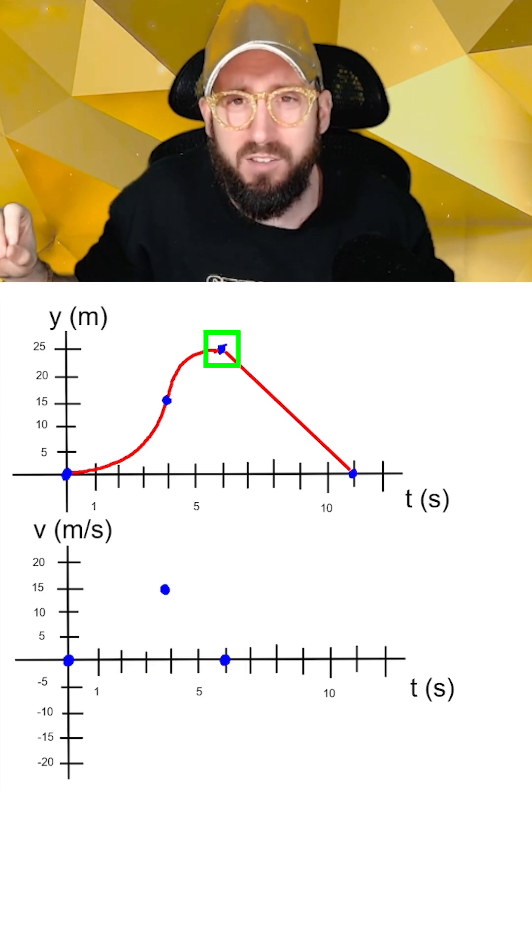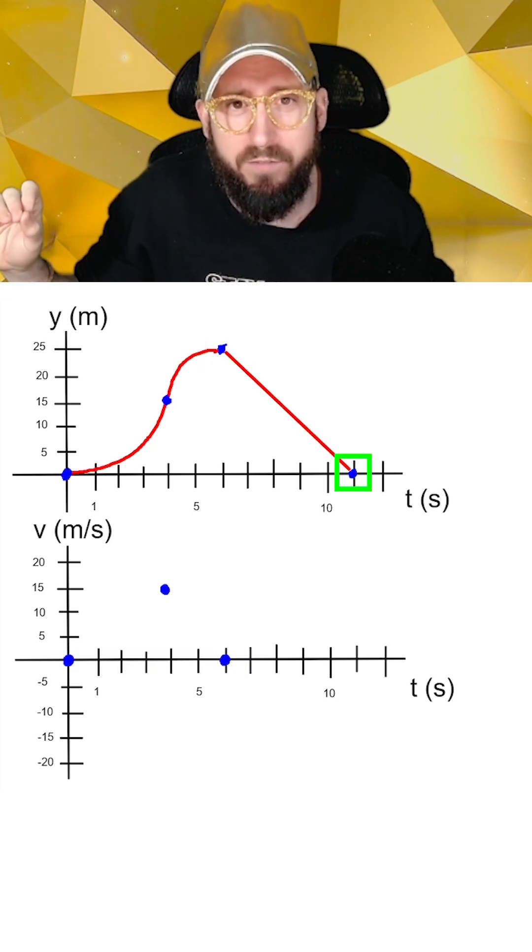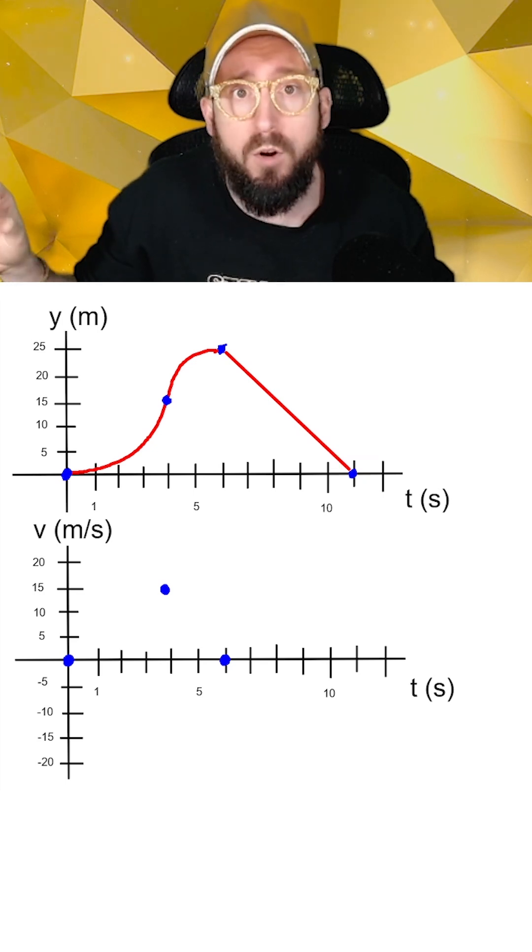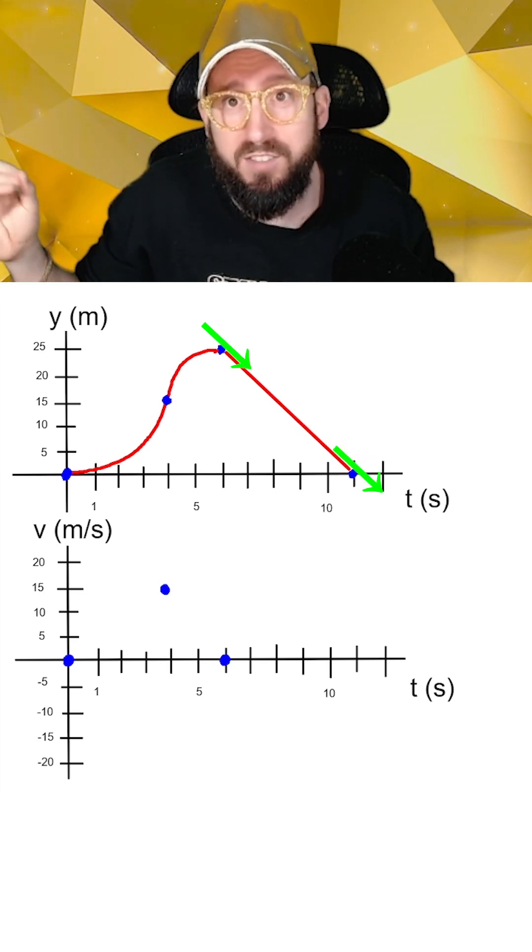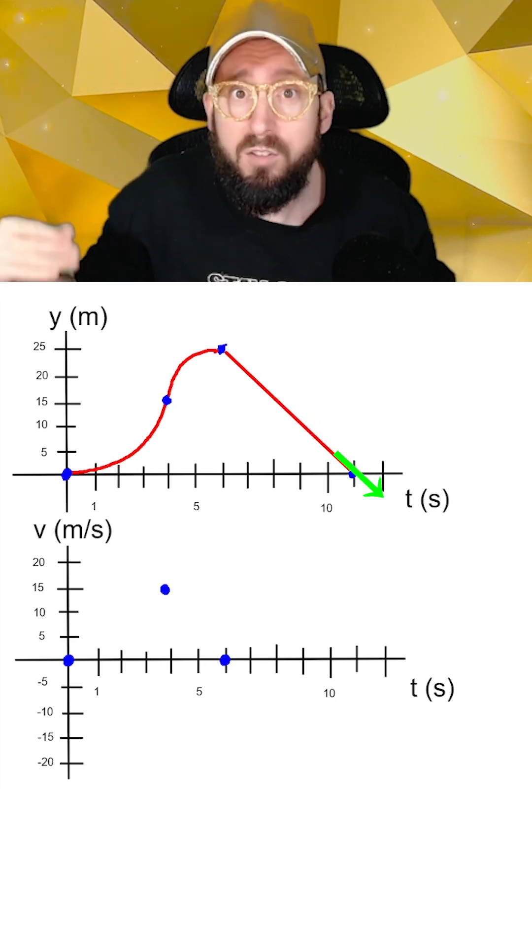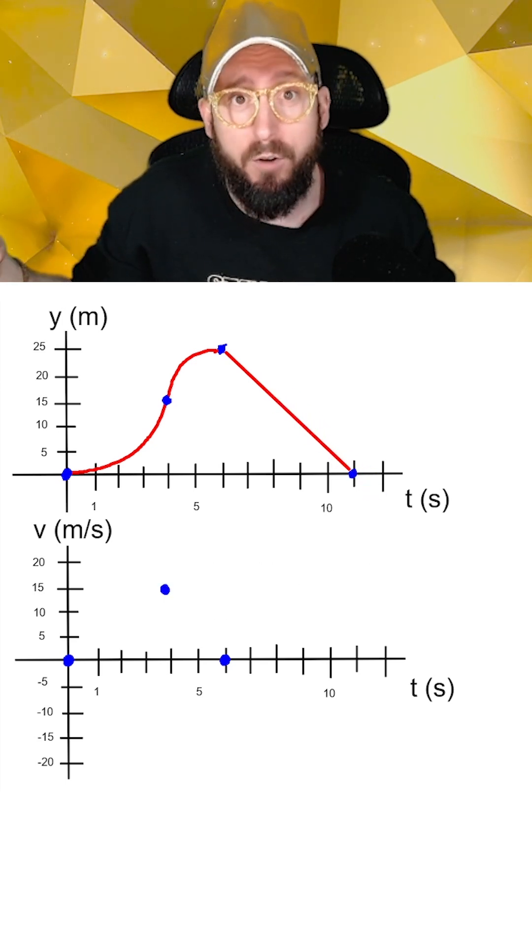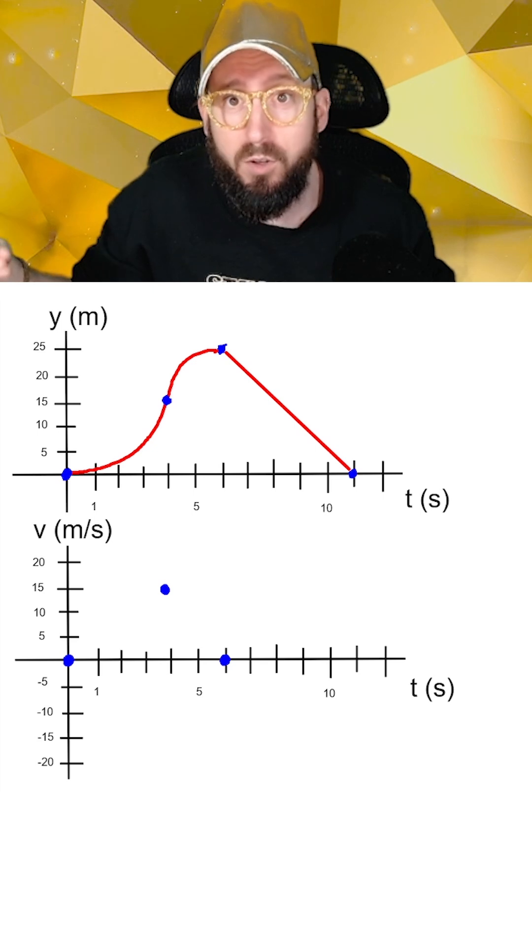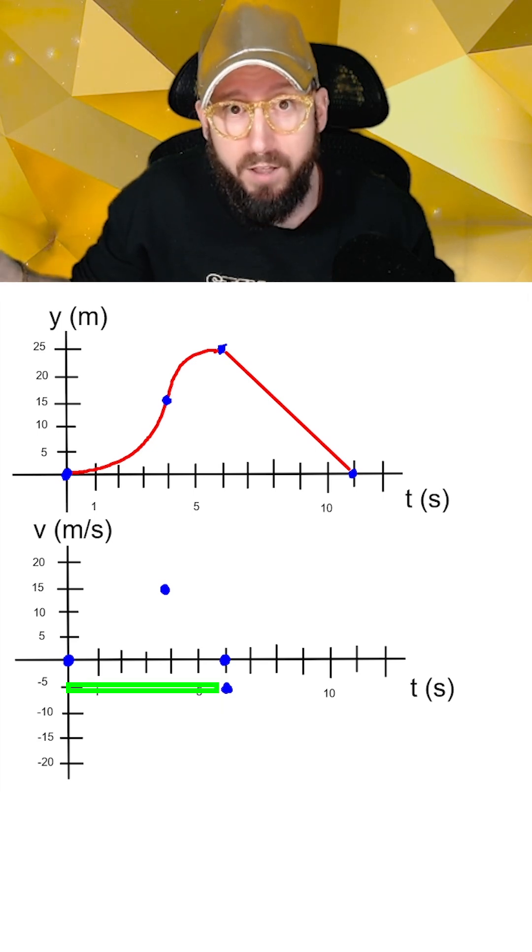If we look just past t equals six until our final time point at t equals 11, when the dog reaches the ground, we notice that the slope of our position graph here is negative. And even more so, it's the same slope all the way from t equals six to t equals 11. So here the slope is negative five and on our velocity graph right past t equals six, we're going to put a dot at v equals negative five and another dot at v equals negative five when t equals 11.